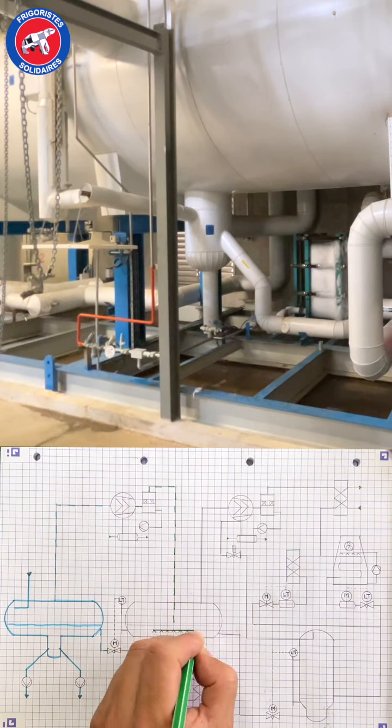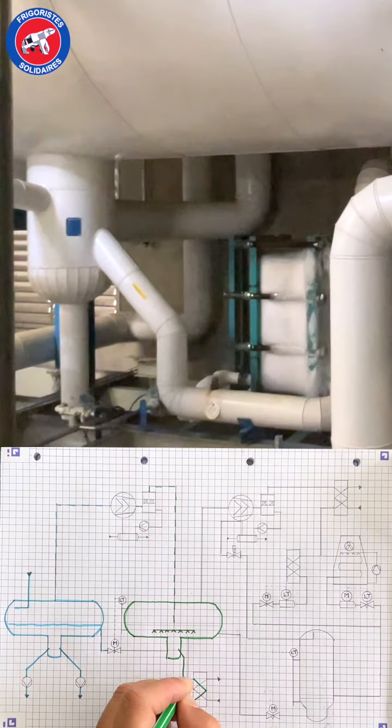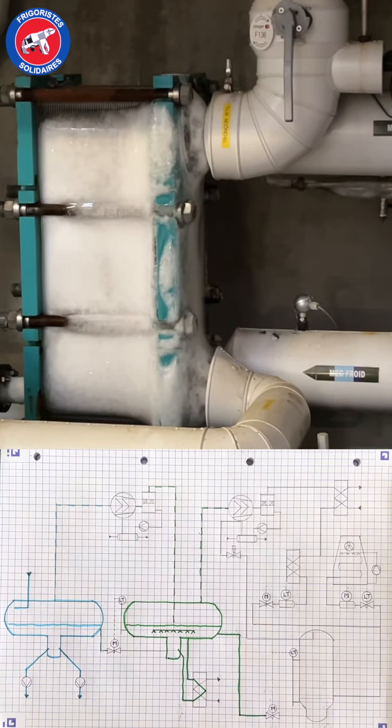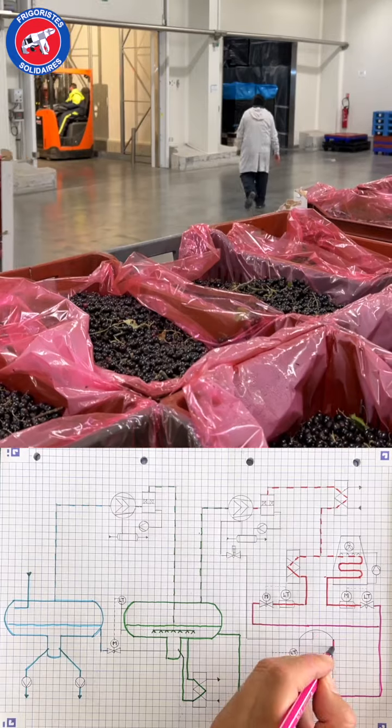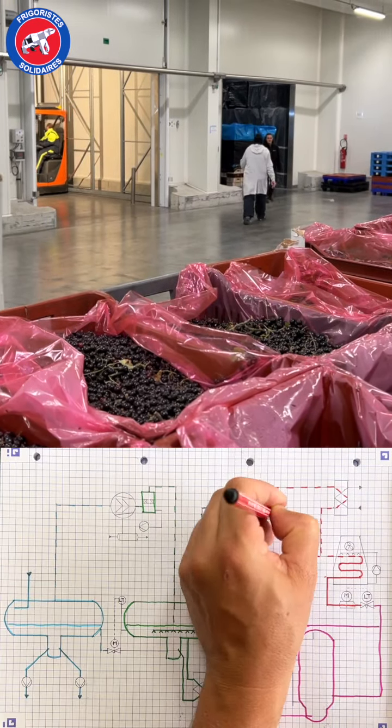A heat plate exchanger fed by gravity with liquid ammonia at minus 10 degrees C produces glycol water to cool the docking station of the logistics platform.